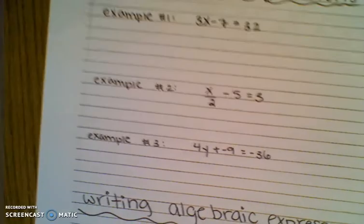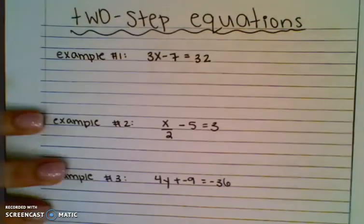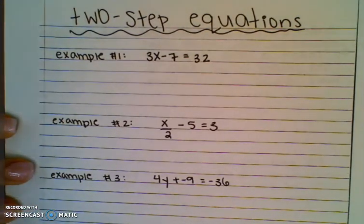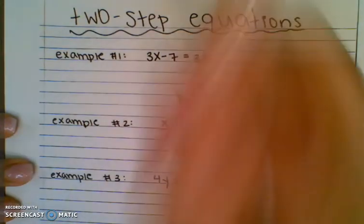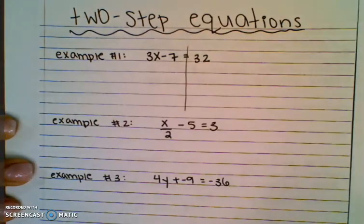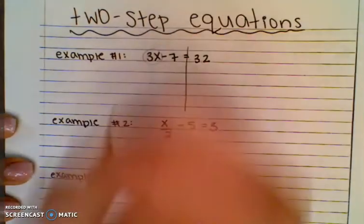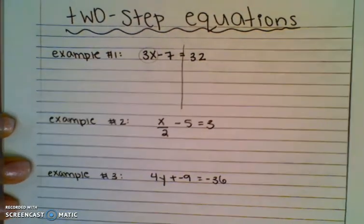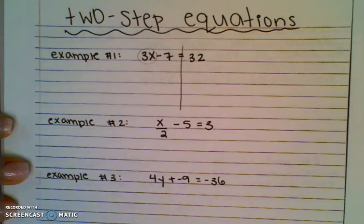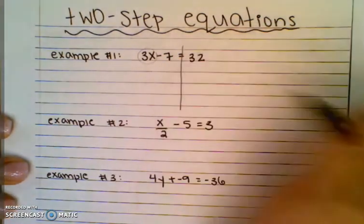Then we have our two-step equations, which just means there's going to be something else with the x that we have to do last. You draw your line down the middle, and this is what we're working on last because there's an extra number with the x. So we're getting rid of that. The first thing you have to get rid of is minus 7.